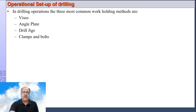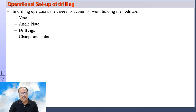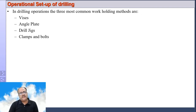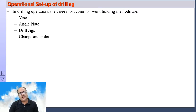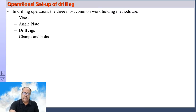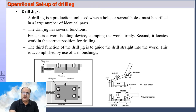How do you hold a workpiece on the table? You can use vices — plain vices, superior vices, universal vices — angle plates, drill jigs, clamps, and bolts. I will discuss drill jigs in slight detail as drill jigs might not be known to you.